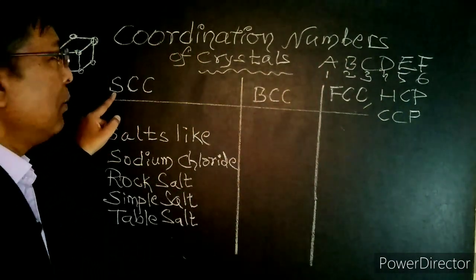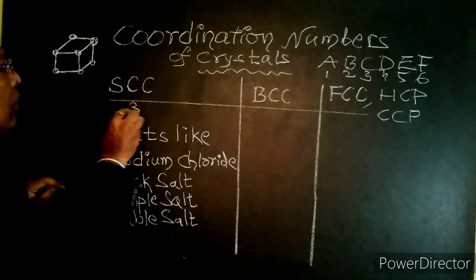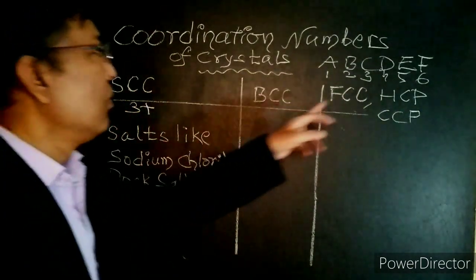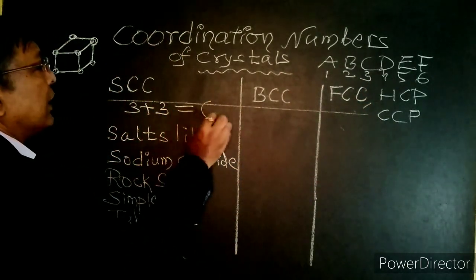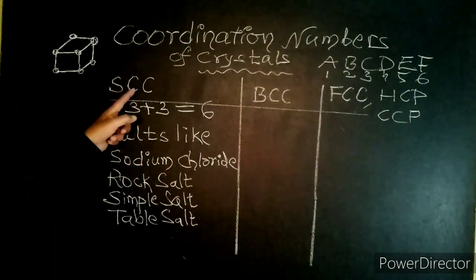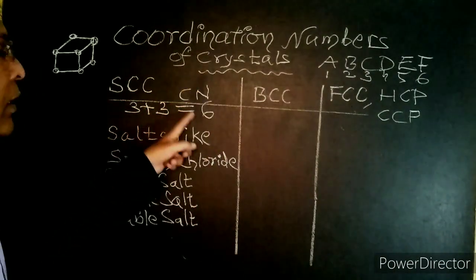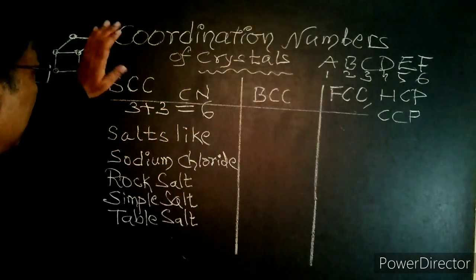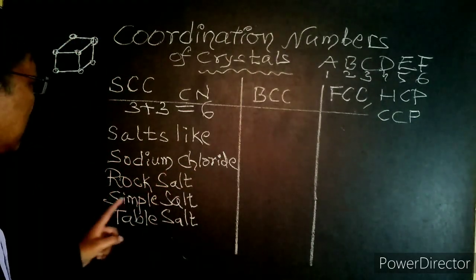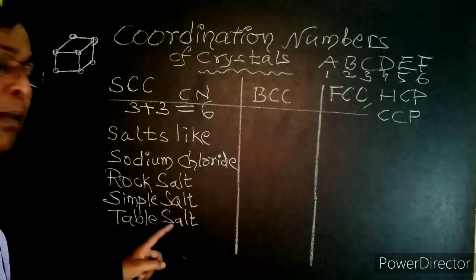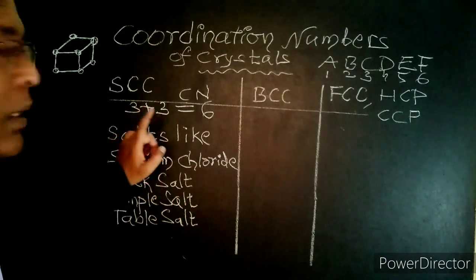First, let's find the coordination number of simple cubic crystal. In SCC we do not have the letter S, but we do have C and C. The value of C is 3, and another C is also 3, so total it becomes 6. Therefore the coordination number of simple cubic crystal is 6. Examples of simple cubic crystals are salts like sodium chloride, rock salt, simple salt, and table salt — all have coordination number 6.